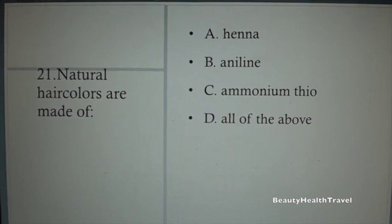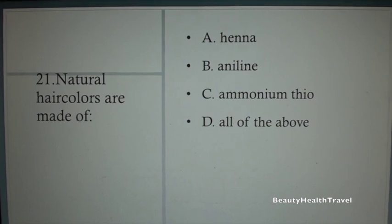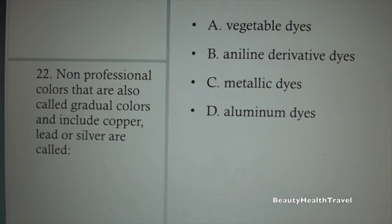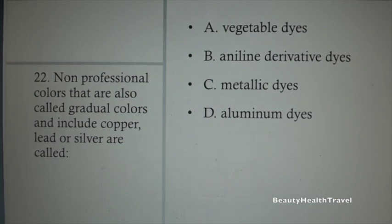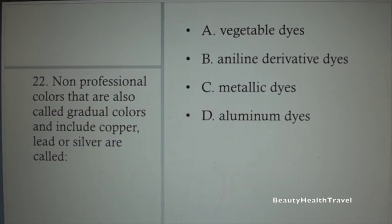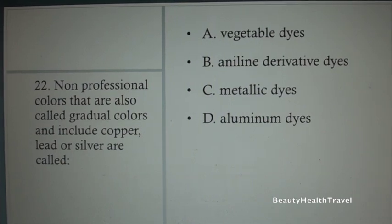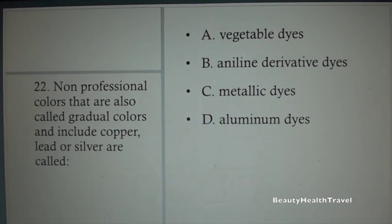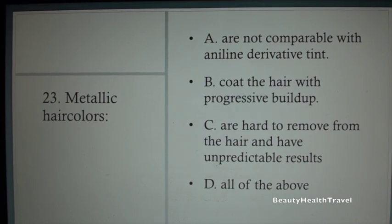Question 20: Hair colors that are made of plant materials like vegetables, leaves, bark, or flowers are called: A. Metallic hair color, B. Natural hair color, C. Compound hair color, D. Tertiary hair color. Question 21: Natural hair colors are made of: A. Henna, B. Aniline, C. Ammonium, D. All of the above.